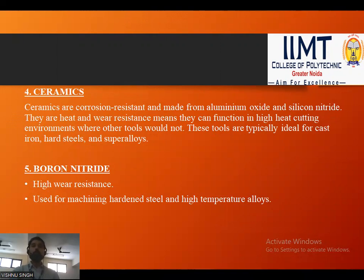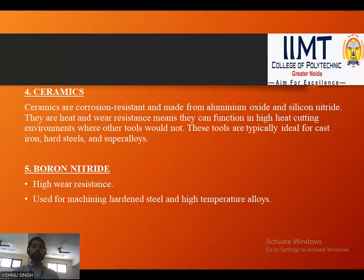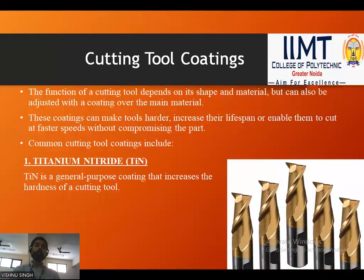Next, ceramics are corrosion resistant and made from aluminium oxide and silicon nitride. They are heat and wear resistant, meaning they can function in high-heat cutting environments where other tools would not. These tools are typically ideal for cast iron, hard steels, and super alloys. Next is boron nitride, which has high wear resistance and is used for machining hardened steel and high-temperature alloys.